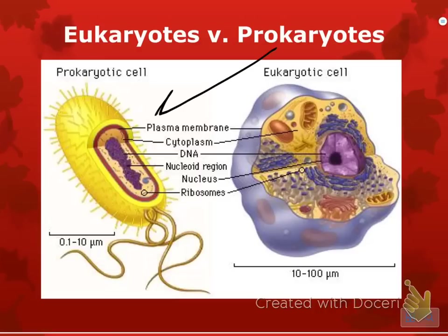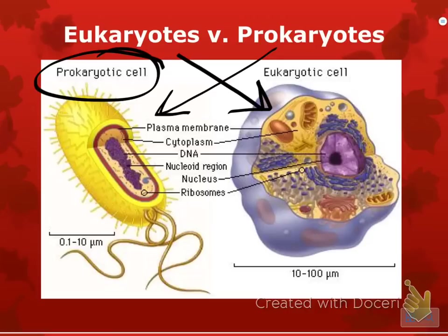Don't get confused — these headings are on opposite sides. So this is a prokaryotic cell, and this is a eukaryotic cell. The prokaryotic cells are very simple, but eukaryotic cells have all of those other organelles: your mitochondria, your Golgi, your ER — all of those things are only in eukaryotes.